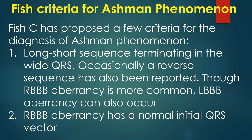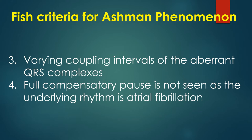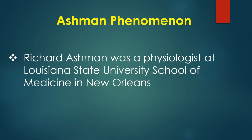Criteria for Ashman phenomenon: 1) Long-short sequence terminating in the wide QRS; occasionally a reverse sequence has also been reported. Though RBBB aberrancy is more common, LBBB aberrancy can also occur. 2) RBBB aberrancy with a normal initial QRS vector. 3) Varying coupling intervals of the aberrant QRS complexes. 4) Full compensatory pause is not seen as the underlying rhythm is atrial fibrillation.